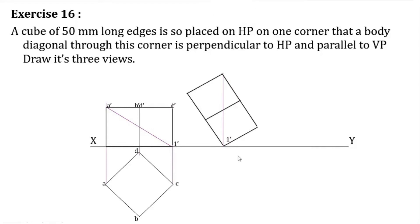The front view is drawn with 1-dash at the bottom. This is the condition where the solid diagonal passes through the resting corner — the resting corner being 1-dash. So the solid diagonal through the resting corner, 1-dash, is perpendicular to HP and parallel to VP. That's it — very simple. Now we go for the top view.